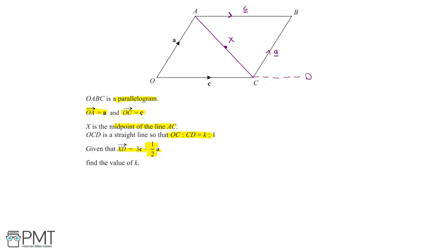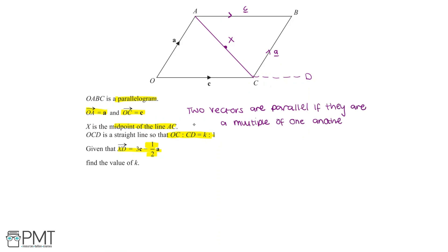There is a vector fact which will help us answer this question: two vectors are parallel if they are a multiple of one another. Since OCD lies on a straight line, OC is parallel to CD, which means the vector OC is a multiple of the vector CD. So we can say that the vector CD is some multiple of c, and we can call this constant X for the time being.